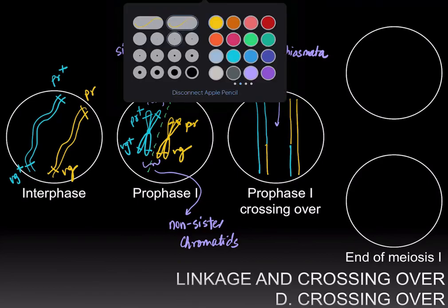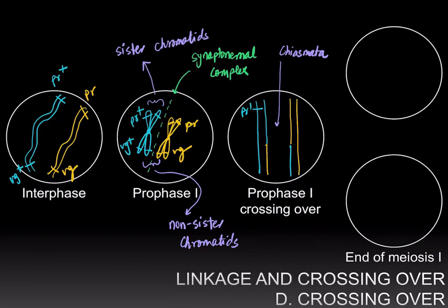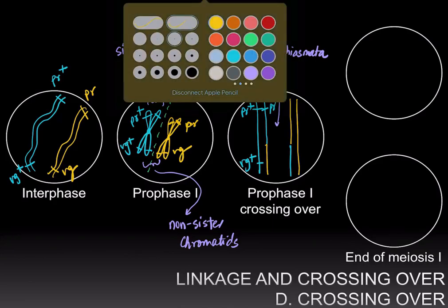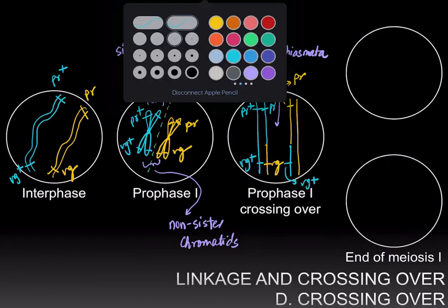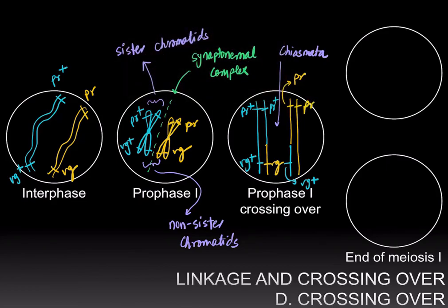As a result, we have one chromatid with purple-plus vestigial-plus — a parental genotype — and a recombinant chromatid, one of the partners that underwent crossing over. The other partner will be purple vestigial-plus, another recombinant genotype. The fourth chromatid will have the parental genotype of purple and vestigial — both mutant alleles.